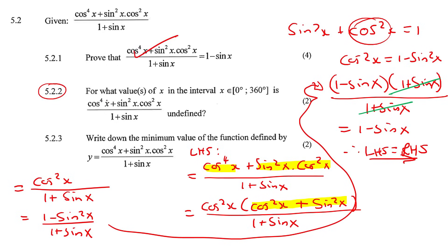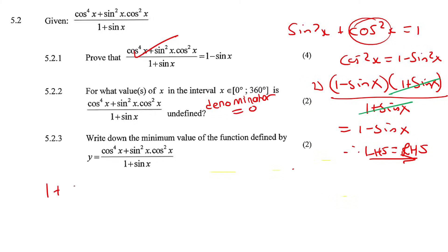Undefined is when you have a denominator that is 0. That is what undefined means. So we can say 1 plus sin x and we can make that equal to 0, and then we can say where is sin x equal to negative 1.